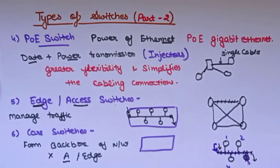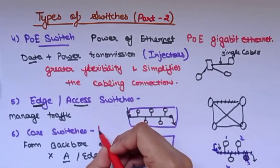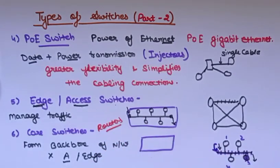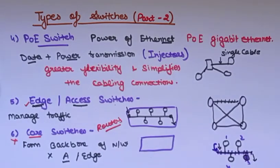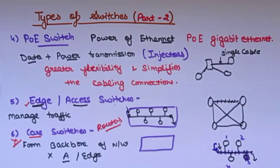Core switches connect user or device edge networks and data center networks in enterprise LANs to the routers. Core switches always work with routers and do not follow the rules of edge switches or aggregation switches. In computer networking we don't use this type of switch very frequently. We will discuss other types of switches in the next video. Thank you.